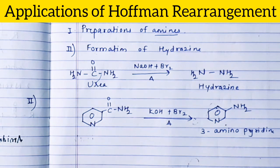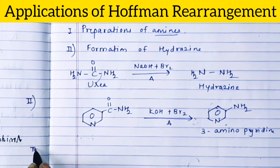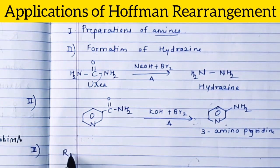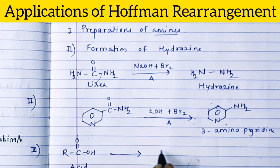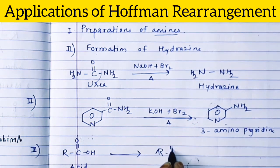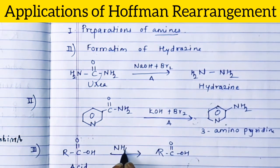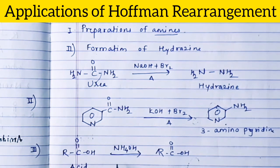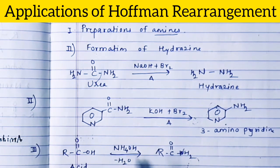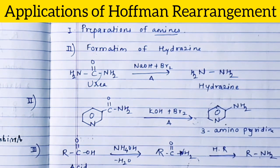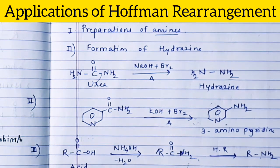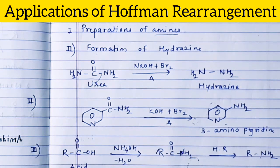This is another application of Hofmann rearrangement. Now the third application: when an acid is available, it is first converted into an amide by reaction with NH4OH, producing an ammonium salt, which on dehydration gives the amide R-CO-NH2. This amide then undergoes Hofmann rearrangement and is converted into the amine R-NH2. A number of amino acids are also produced by this reaction.